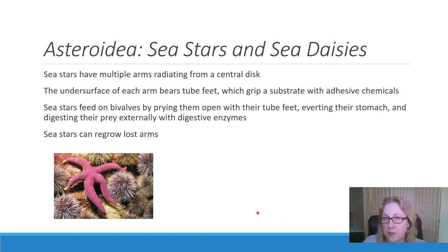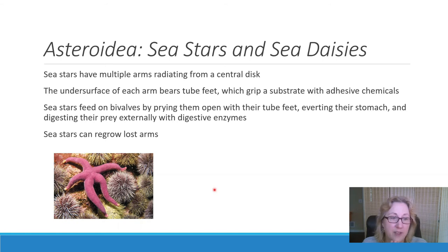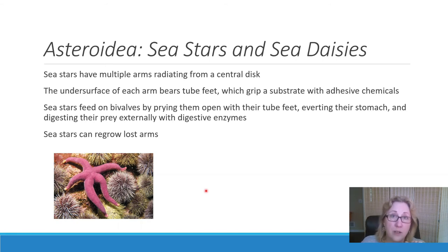Sea stars are probably the most familiar to us. They typically have five arms and are carnivorous — they attack bivalves like clams and are very strong, capable of actually opening clamshells. They have the ability to stick their stomach outside of their body and digest prey externally, which is really unusual. They can regrow lost arms. In fact, for some of them, that is a strategy to escape predators — if something grabs them, they will let go of one arm to get away, as that's a small price to pay to survive.